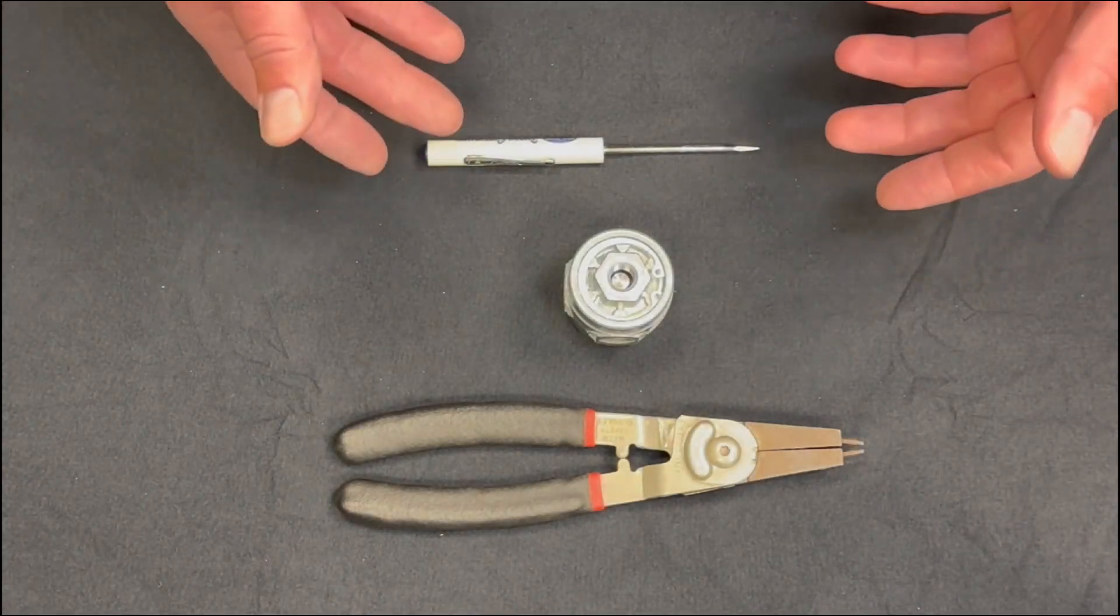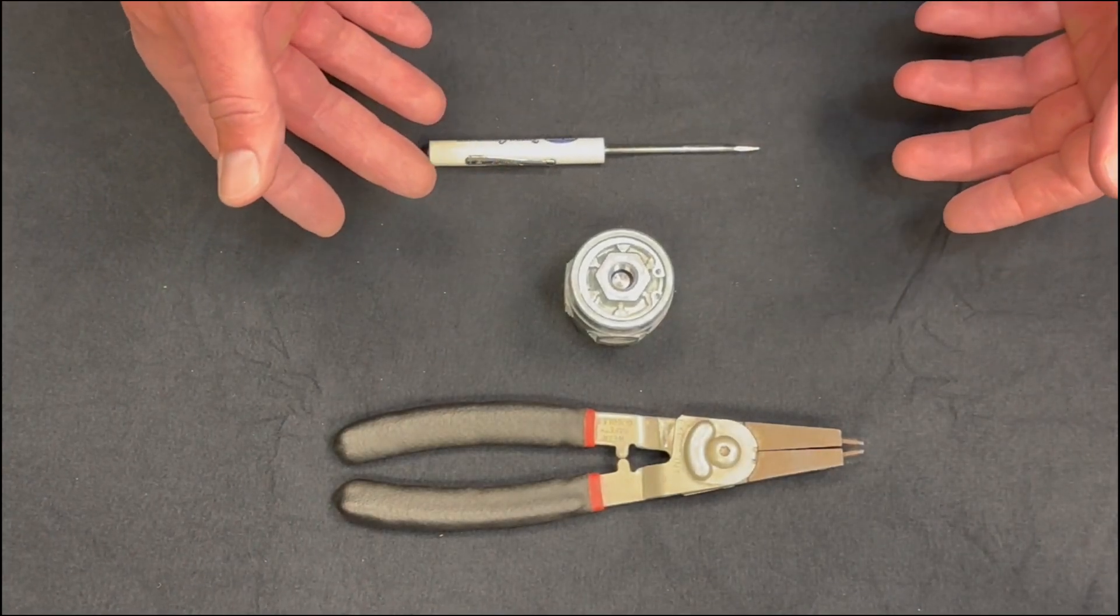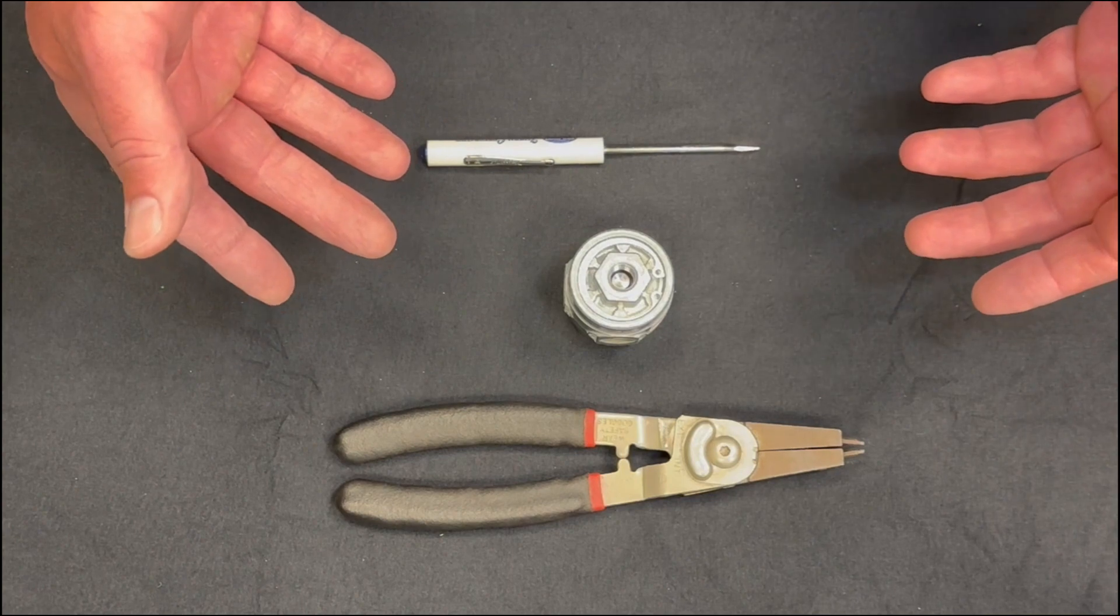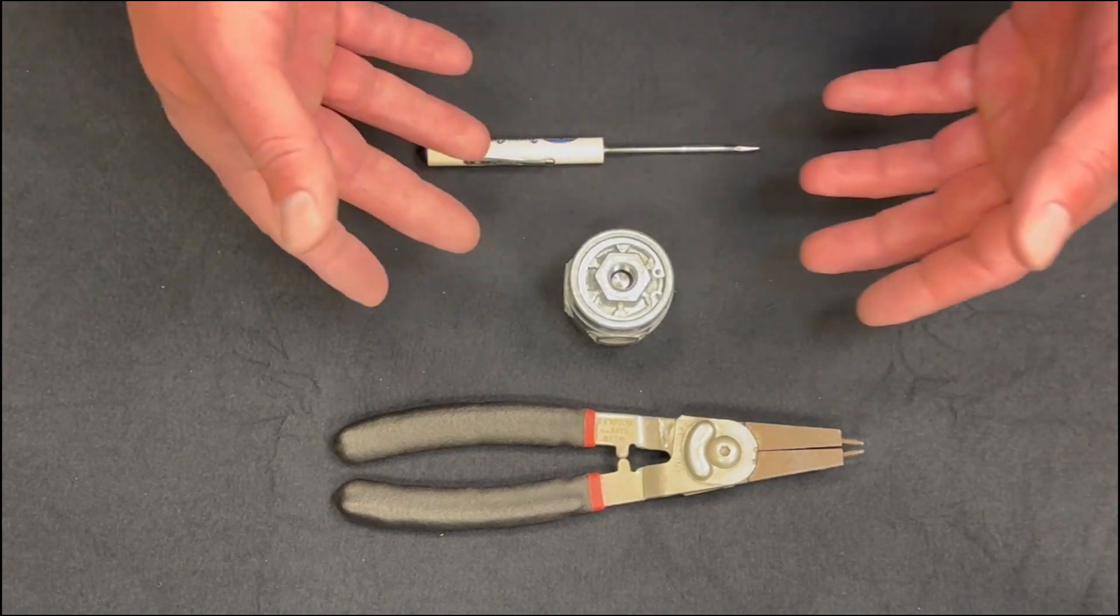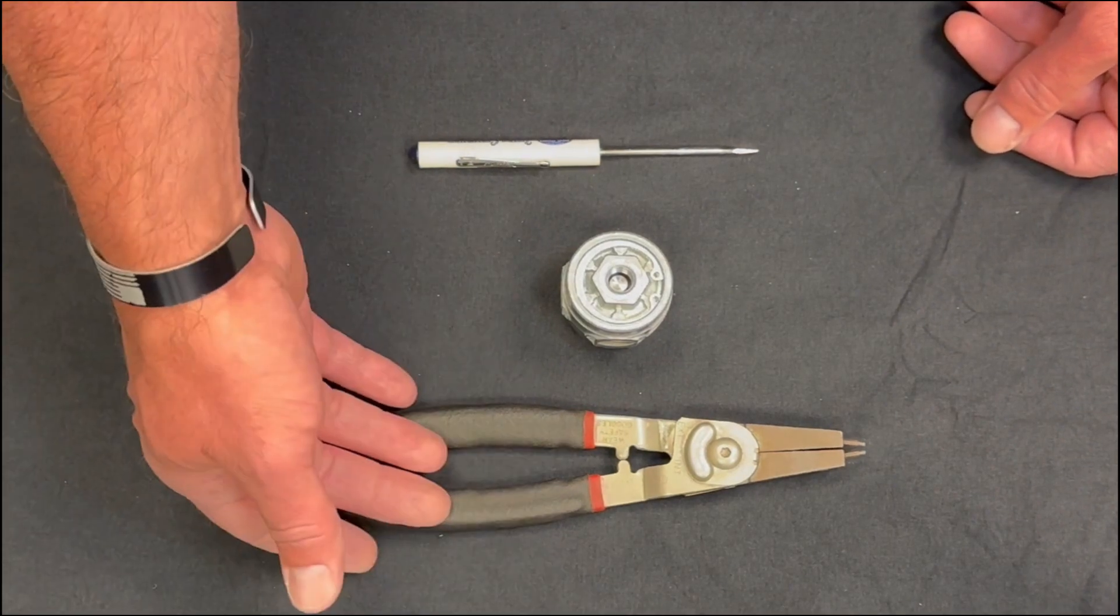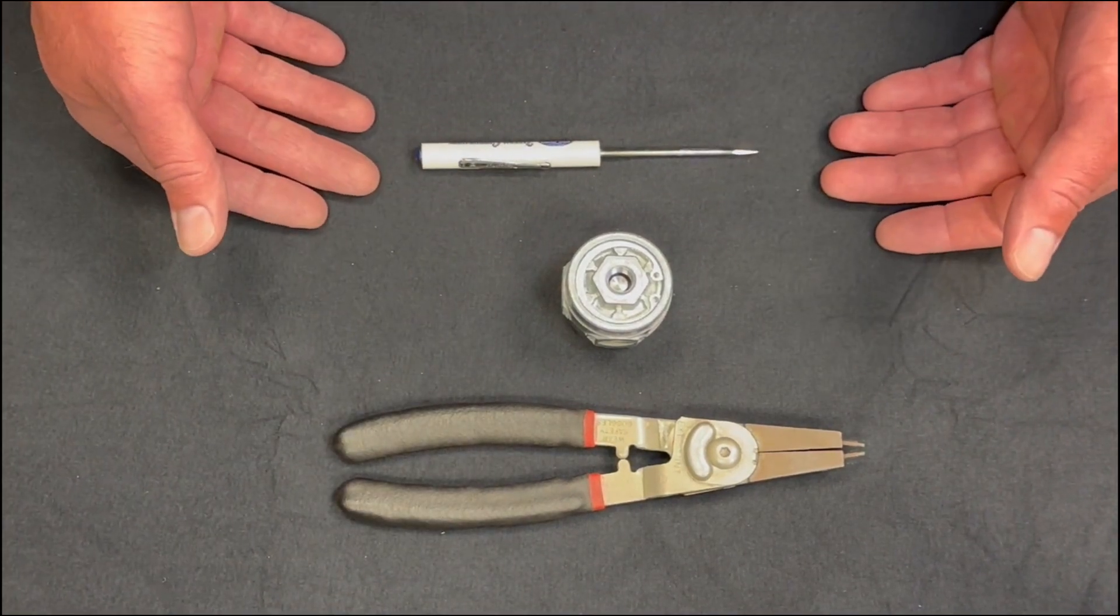One thing to note is that the pilot valve does not need to be removed from the tank in order to troubleshoot, but in some instances it will make it a little bit easier. Troubleshooting is quite simple once everything is disconnected. You just need a set of snap ring pliers and a small flat tip screwdriver.